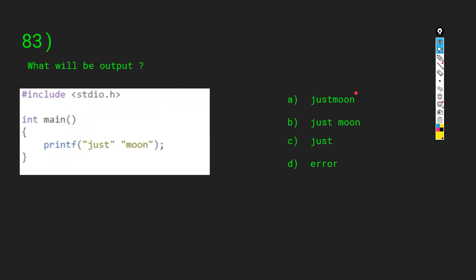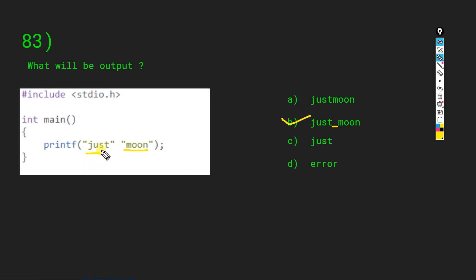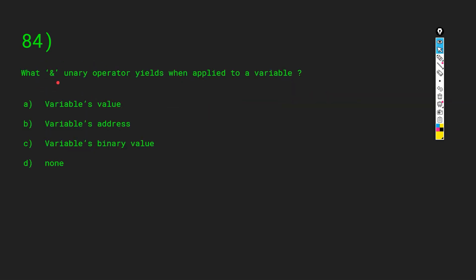What will be the output? We have printf('just')('moon'). Many people make a mistake and tick B. Always remember when dealing with strings, whatever is inside the double quotes is the string's value. A space only appears if it's inside the string. The compiler ignores spaces outside the quotes, so it will print 'justmoon' without spaces.